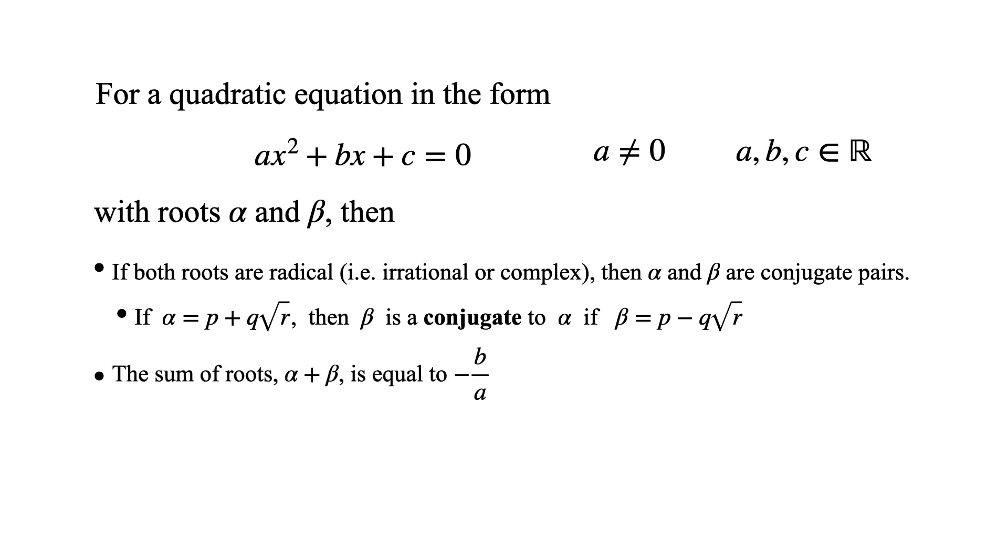Moreover, the sum of the roots is equal to negative b over a, whilst the product of roots is equal to c over a. It is also worth noting that the conjugate property only holds when all the coefficients of the quadratic equation are real numbers. However, the sum and product properties hold for all cases of coefficients.